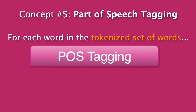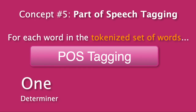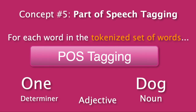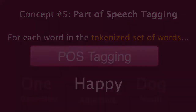For instance, let's say we have a determiner indicating quantity and a noun, 'dog.' If there is an unknown word between these two words, we know that it has to be an adjective. So we could say something along these lines: 'one brown dog' or 'one happy dog.' This is natural language processing in action.